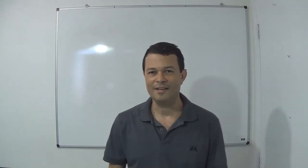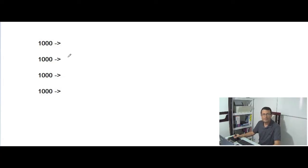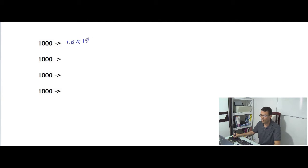Let's cut to the chase. Let's take a look at this demonstration. I'm gonna represent the number 1000 in four different ways. The number 1000 can be represented as 1.0 times 10 to the third power, because 10 to the third power is equal to 1000, and 1000 times 1.0 is equal to 1000.